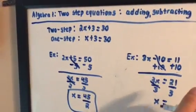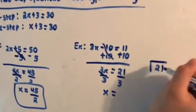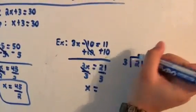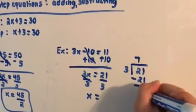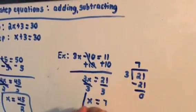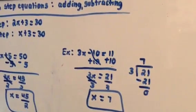And in this way, you don't have to leave it as an improper fraction. You can convert it into a whole number. 3 goes into 21 seven times. And that is your answer.